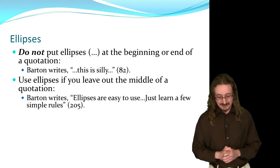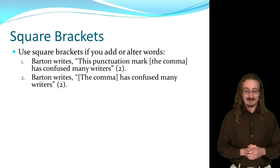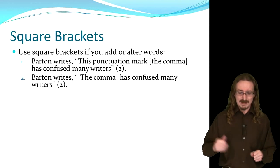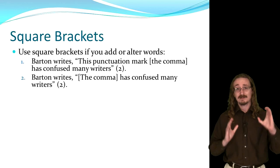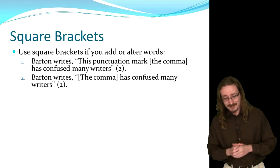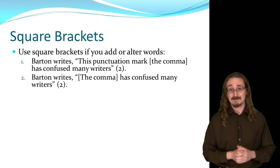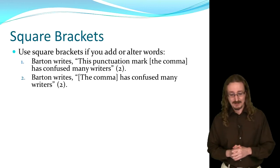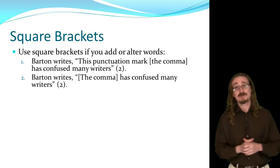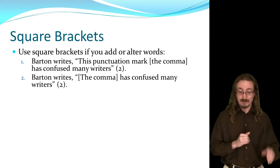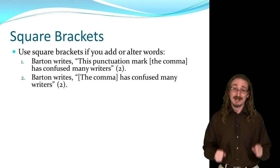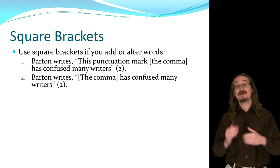Square brackets — these keys are next to the P on my keyboard — are used if you want to add something to a quotation that's not actually in it. A good example: 'Barton writes, "this punctuation mark [the comma] has confused many writers."' I'm letting the reader know that if they went to that book and looked at page two, they would not see 'the comma' in brackets — I just added that so it would be clear to the reader what I was talking about. Another example: 'Barton writes, "[the comma] has confused many writers."' I replaced 'this punctuation mark' with just 'the comma,' saved a little space. But you have to signal to the reader that you've changed the quotation — if you don't, they'll think you're trying to alter the meaning.